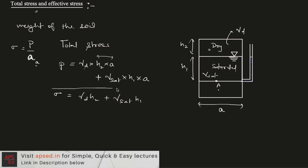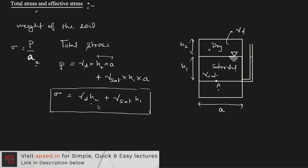That way we can find out the total stress at a point in the soil mass. We just take the unit weight and the depth of each particular layer, and by summing the products for all such layers we can find out the total stress.